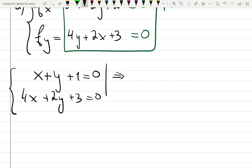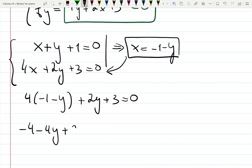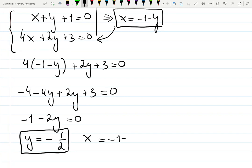From equation number one, x equals minus 1 minus y. Put it in the box, we will need it. Plug into the second equation, that's the substitution method. 4 times minus 1 minus y plus 2y plus 3 equals zero. Minus 4 minus 4y plus 2y plus 3 equals zero. Minus 2y equals minus 1, so y is minus one half. Then go back to the box for the x value: x equals minus 1 minus minus one half, which gives you also minus one half.